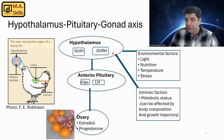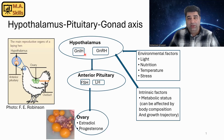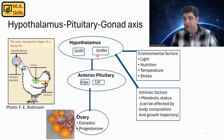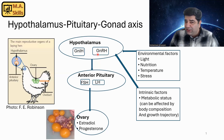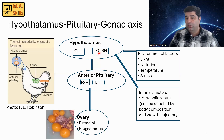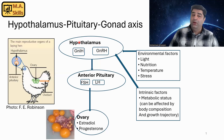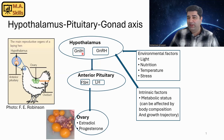It starts with the hypothalamus, which produces and secretes GnRH — gonadotropin-releasing hormone — or GnIH, which is gonadotropin-inhibiting hormone. Just imagine driving a car: whenever you push the gas pedal you move the car. Here, in terms of the reproductive axis, GnRH is the gas pedal that starts the reproductive axis and initiates laying.